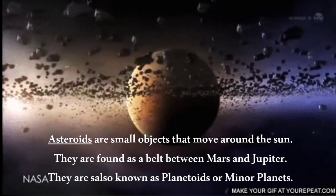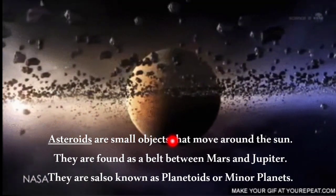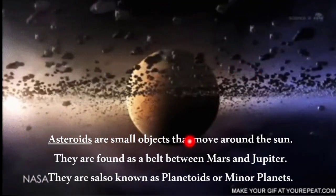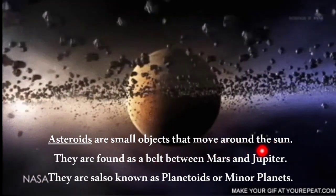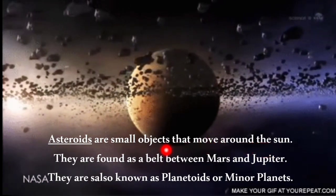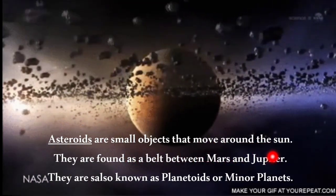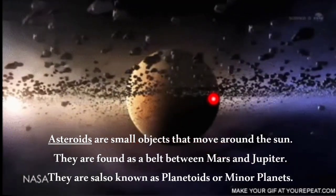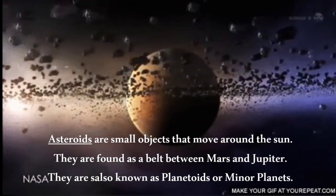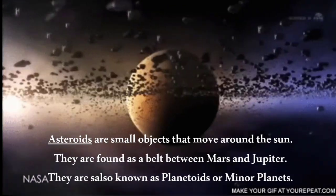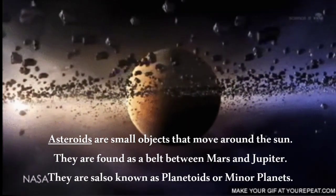Asteroids are small objects that move around the sun. They are found as a belt between Mars and Jupiter, and are also known as planetoids or minor planets.